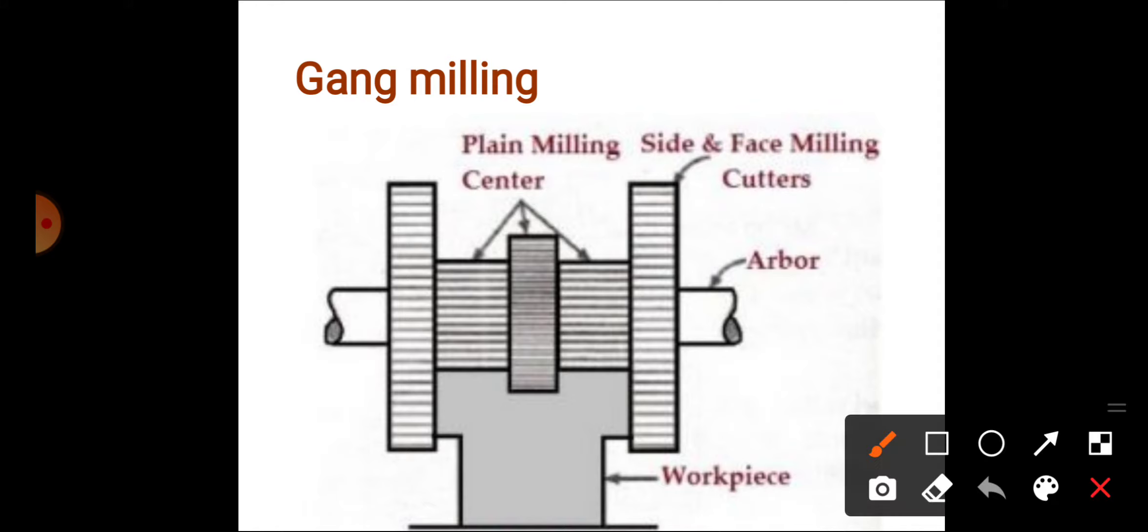Let's see. This is the work piece and we have cutters: first, second, third, fourth, and fifth. Five cutters are mounted on one arbor to perform cutting. So this is gang milling and next is...